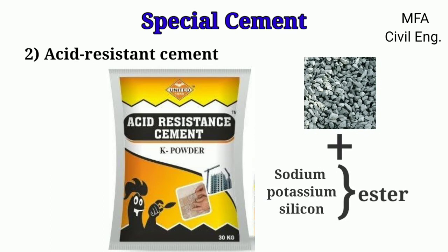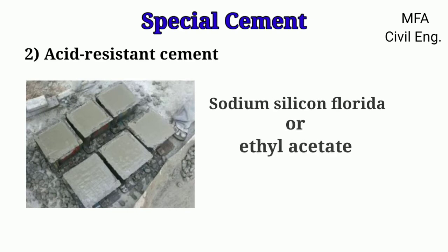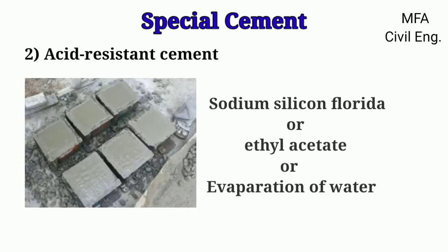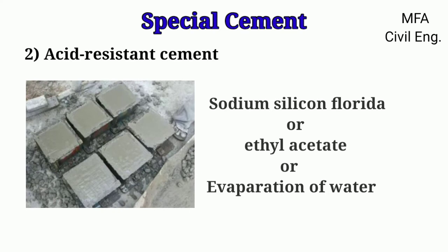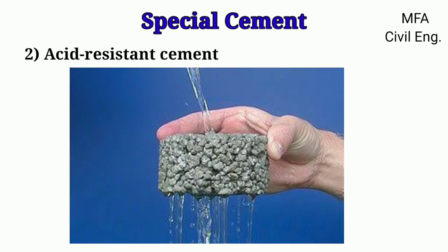Acid resistant cement is produced by mixing an inert acid resistant aggregate with sodium or potassium silicate ester in a suitable proportion. Their cementing properties are due to the precipitation of silica, caused by adding a suitable setting agent like sodium silicon fluoride or ethyl acetate, or by evaporation of water. The bond developed by the silicate cement is hard but brittle. On drying, this cement becomes very porous and permeable to liquid, so it should always be kept wet or immersed in liquid to prevent shrinkage of the gel.